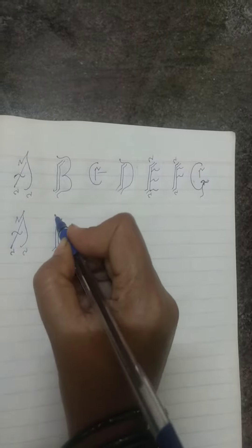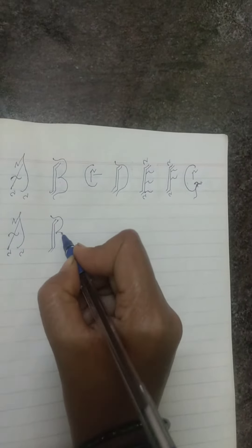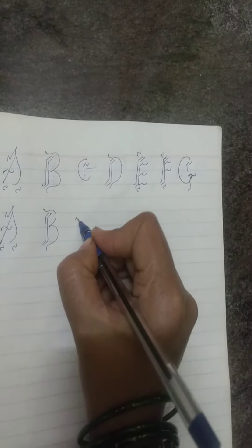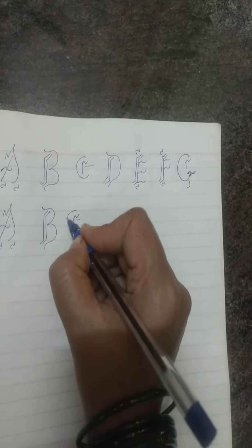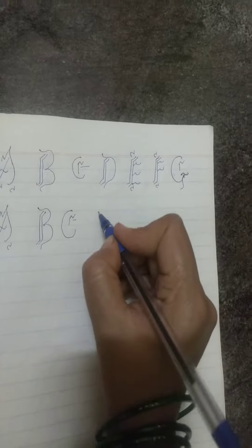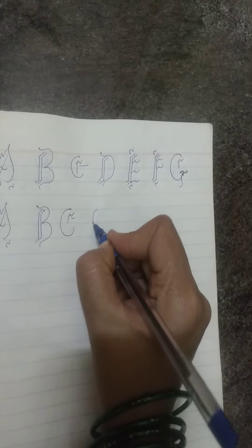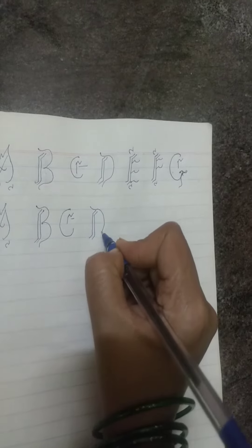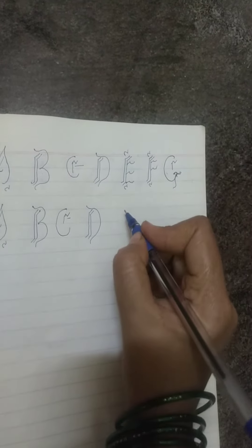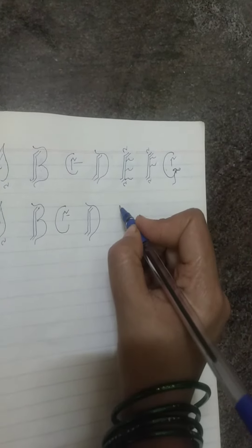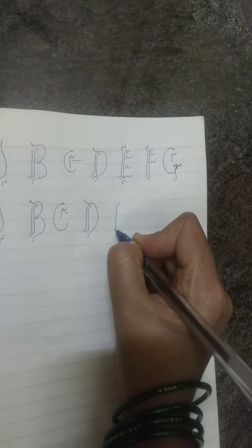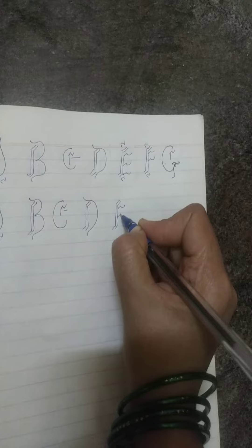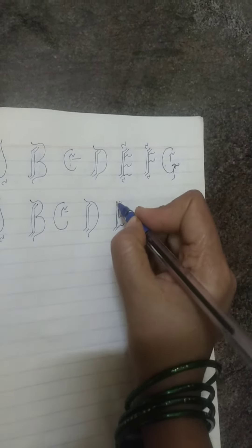This is wave stroke — this completes C. Now D, using wave strokes. Next E: I stroke, wave stroke, and crown strokes — this completes E.